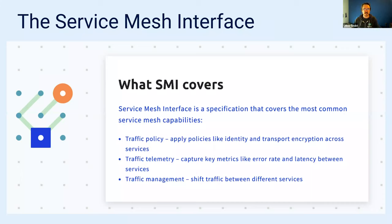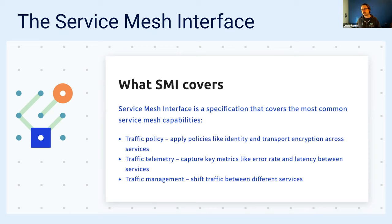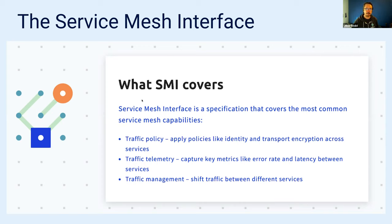The Service Mesh Interface is a project initially sponsored by folks at Azure. We've been heavily involved in it, as have most other service meshes. It provides three core APIs: traffic split, an SMI metrics telemetry API providing uniform metrics that work with any service mesh, and a policy API. Linkerd doesn't support the SMI policy API yet — we're working on revving that API so we can support it better, probably in 2.11.